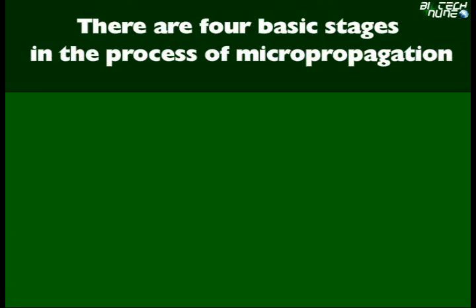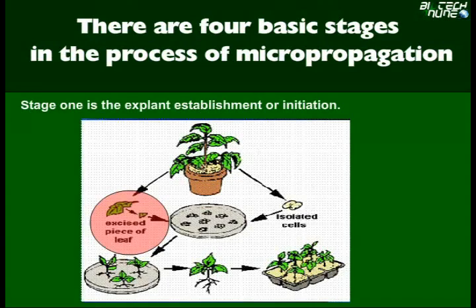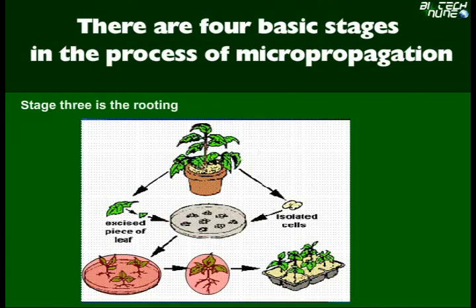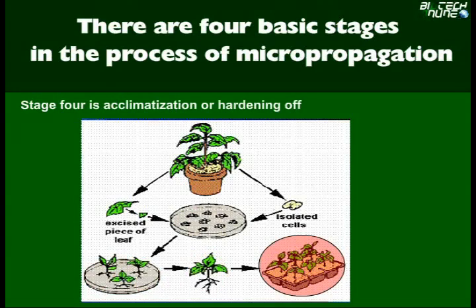There are four basic stages in the process of micropropagation. Stage 1 is the explant establishment or initiation. Stage 2 is the multiplication. Stage 3 is the rooting. Stage 4 is acclimatization or hardening off. Acclimatization means making the plant adopt to the environmental conditions.